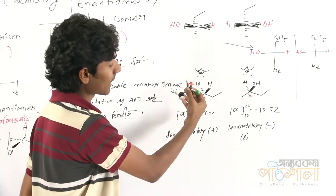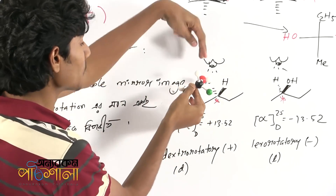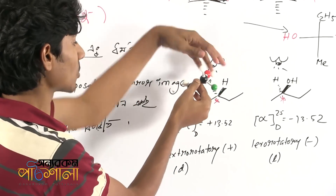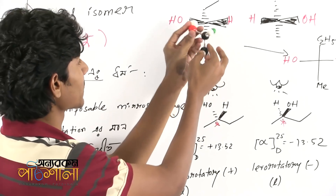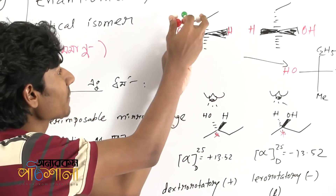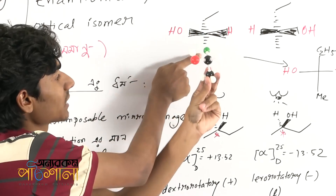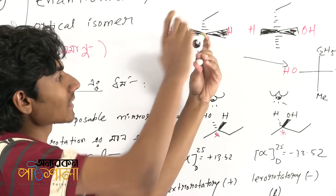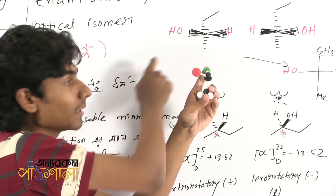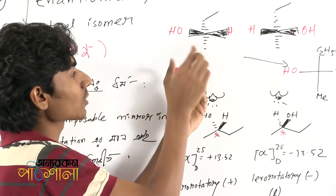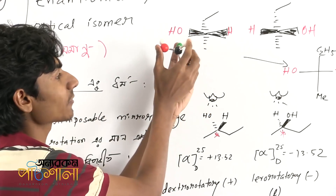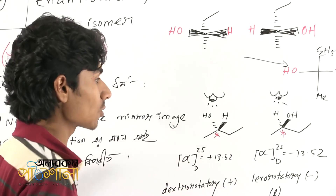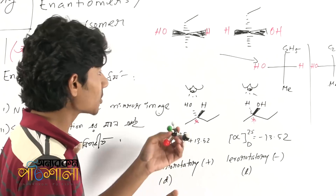Ethyl is our hand. Ethyl is methyl. From the top view, you can see hydrogen. If you see the top view, you can see the hydrogen. Then OH and hydrogen are going out of the plane — use the wedge formula. Similarly, this is the top view. This is the view of the mirror image.